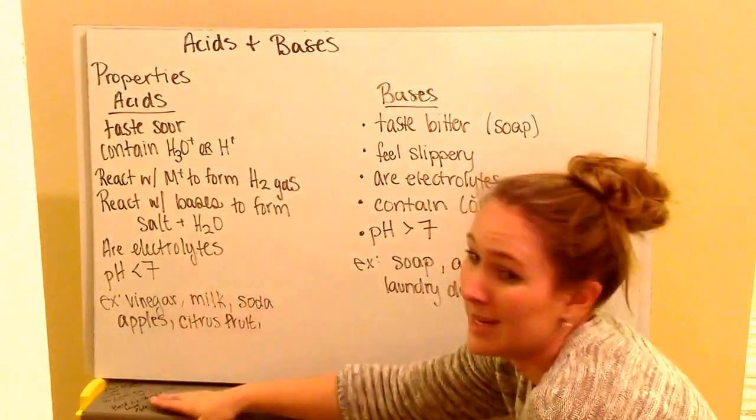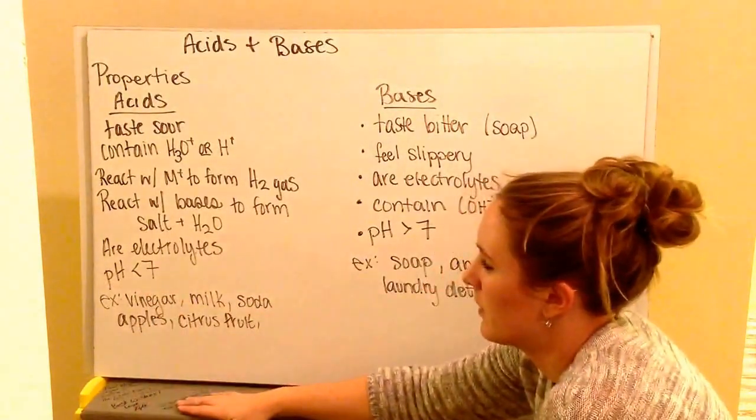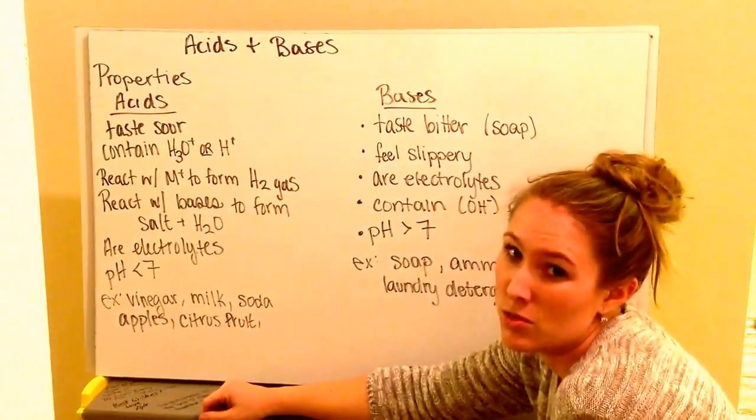They are electrolytes, so they can conduct electricity. And they have a pH less than 7. Some examples would be vinegar, milk, soda, apples, and other citrus fruits.